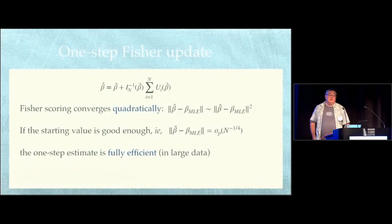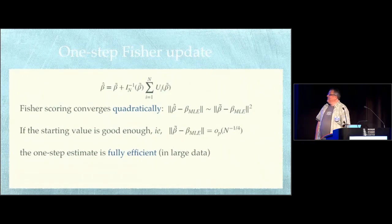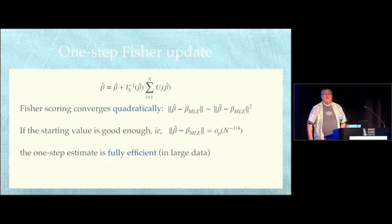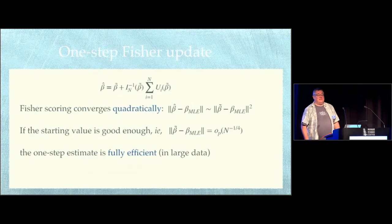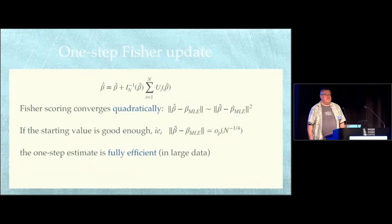So what I'm proposing here is using a one-step Fischer scoring update. So you've got a starting value, beta twiddle, and you do one iteration of Fischer scoring, which involves computing the score vector and the information and then using them to create an update. We know that Fischer scoring converges quadratically. The number of accurate digits doubles with each iteration once you get close enough. And so that means that if the starting value beta twiddle is close enough, one iteration gives you an estimate that's just as good as iterating all the way to convergence.